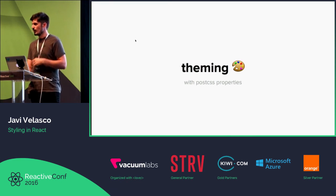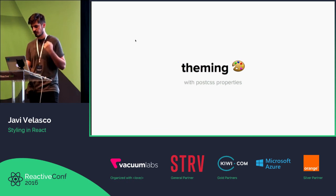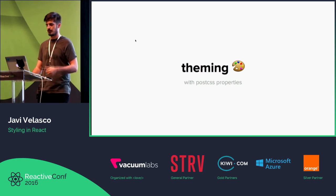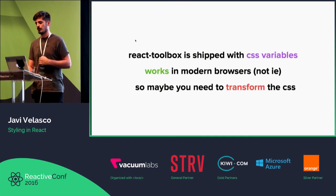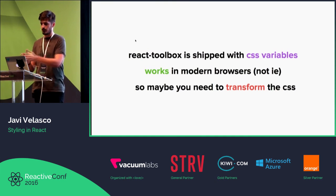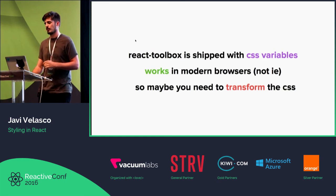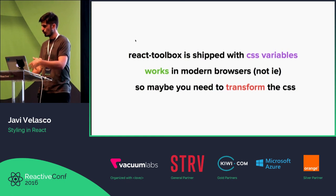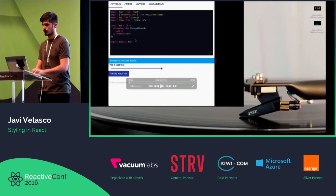And what about theming? We are using PostCSS to customize things like primary color, secondary color, and stuff like that. We are shipping CSS variables that work with any browser, but Internet Explorer is not working yet. So maybe you want to transform the CSS — but it's still awesome. We are shipping a script, so it's really easy, you don't need any setup. Just run the script and generate your theme.css or your theme.js, and you're done.